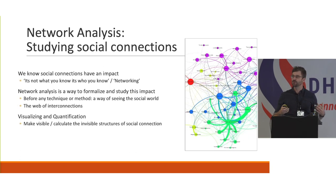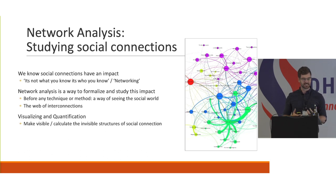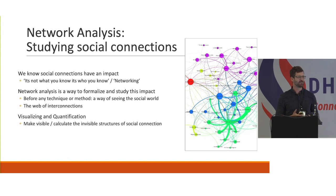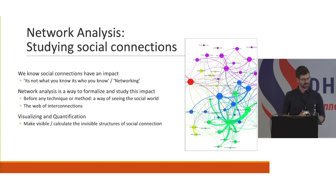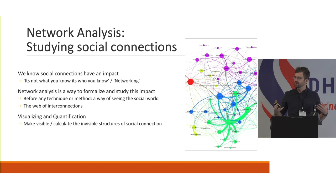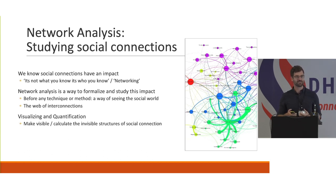I'm using this as the root of everything I'm talking about today, but I want to talk about two methods. The first is network analysis. Network analysis offers an exciting set of tools to study social connections in society. We all have a vague sense that social connections are important — we've all heard 'it's not what you know, it's who you know.' What network analysis offers is a set of tools to formalize the study of social connections. Before it's a specific set of methods, it's a way of seeing the world — shifting our attention from just individuals to seeing individuals bound in a web of interconnections, and thinking about how that set of social ties shapes the lives of individuals or larger communities. Network analysis offers tools for visualizing and quantifying — making visible and calculating this otherwise invisible structure of social connections.